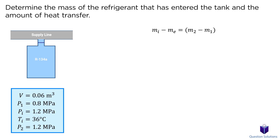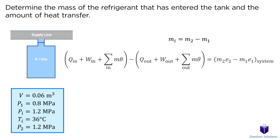Let's start with the mass balance equation for our control volume. In this problem, mass doesn't leave the system but it does enter, so we're left with just the inlet term. For energy balance, we assume that heat was transferred to the tank — if we get a positive answer, our assumption will be right. So we don't have heat output, just heat input. There are no work interactions, kinetic and potential energy changes are negligible, and we have mass coming into the tank but none leaving. So we end up with this simplified equation.